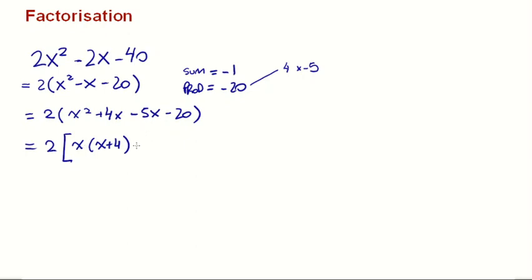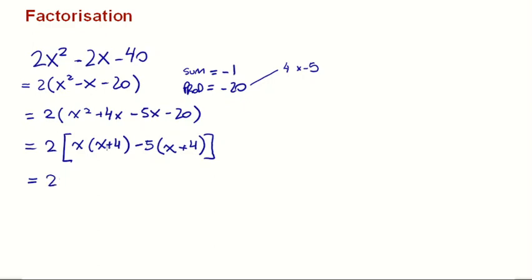Now what's our common factor in the second group? Both numbers are negative, and I can divide 20 by 5, so 5. Then what am I multiplying? x. I've taken the negative signs out, so this will be positive. What happens if I divide negative 20 by negative 5? I get positive 4. So now we've got x plus 4 and x plus 4 — that is a common factor of those two terms.